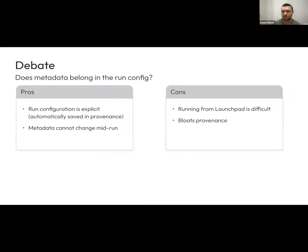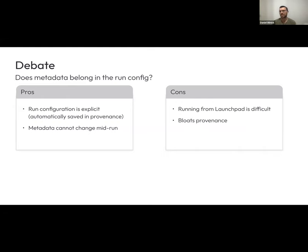I want to share one debate we had on our team. Our pipeline relies on a bunch of metadata, and we really weren't sure whether to hold it in an external database and query it during the pipeline run, or to embed it within the run configuration. The pro of putting it in the run config is that it's explicit. We also store the run configuration as provenance for the dataset, so anything we put in the run config is explicitly stored as provenance.